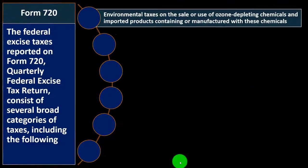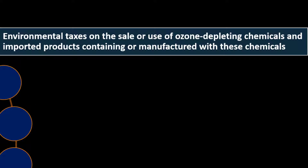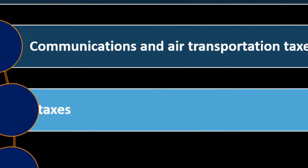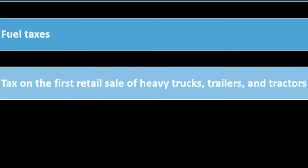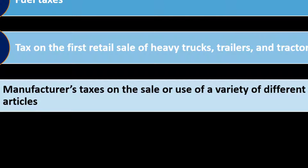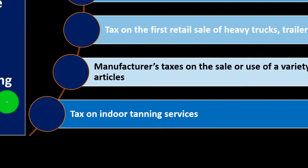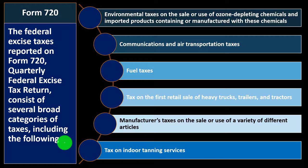These categories include: environmental taxes on the sale or use of ozone-depleting chemicals and imported products containing or manufactured with these chemicals; communications and air transportation taxes; fuel taxes; taxes on the first retail sale of heavy trucks, trailers, and tractors; manufacturers taxes on the sale or use of a variety of different articles; and the tax on indoor tanning services. If you are subject to those taxes or in those industries, you can review Form 720 and its instructions in more detail.